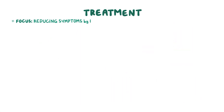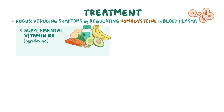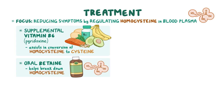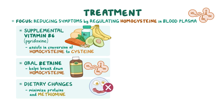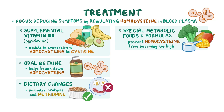Treatment focuses on reducing symptoms by regulating the amount of homocysteine in blood plasma. The first treatment used to control homocysteine levels is supplemental B6, or pyridoxine. Vitamin B6 assists in conversion of homocysteine to cysteine, so increased B6 may lower homocysteine levels. Individuals who do not improve with supplemental B6 alone may require an oral medication called betaine, which helps to break down homocysteine. If symptoms persist, dietary changes might be suggested to minimize consumption of proteins and methionine by limiting animal proteins such as bacon and eggs, and replacing them with more plant-based proteins like beans. Special metabolic foods and formulas may also be required to prevent homocysteine levels from becoming too high.